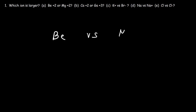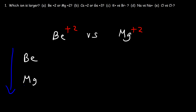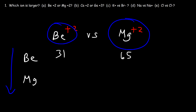Now let's work on some problems. Which ion is larger? Part A: is it the beryllium ion, or is it the magnesium ion? Both of these ions contain a positive 2 charge. If we place these ions in their respective positions on the periodic table, you'll see that magnesium is below beryllium. Ionic radii increases as you go down, so magnesium should be a lot bigger than beryllium. Beryllium has an ionic size of 31 picometers, and magnesium is 65.